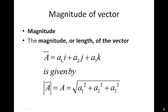Now the magnitude of a vector: if vector A is a1i + a2j + a3k, its magnitude is given by |A| = √(a1² + a2² + a3²). In other words, the square root of the sum of the squares of its components.